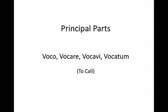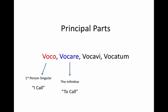Now remember, each verb has four principal parts. Here we have woko, wokare, wokawi, wokatum — the verb 'to call.' We're very familiar with these first two principal parts. The first one is simply the first person singular in the present: 'I call.' And of course our second principal part is our infinitive, the 'to' form of the verb — in this case, 'to call.'